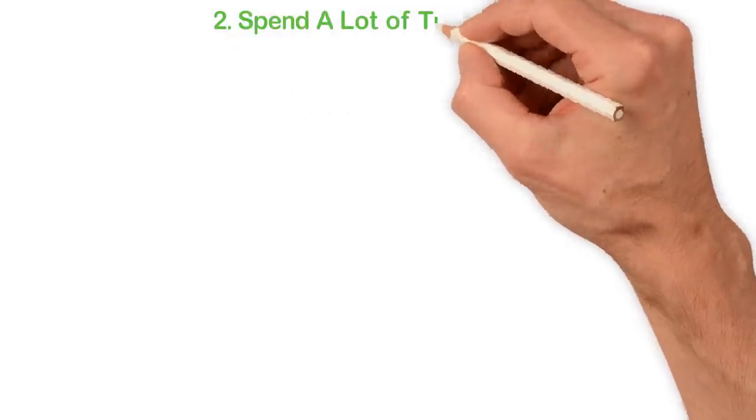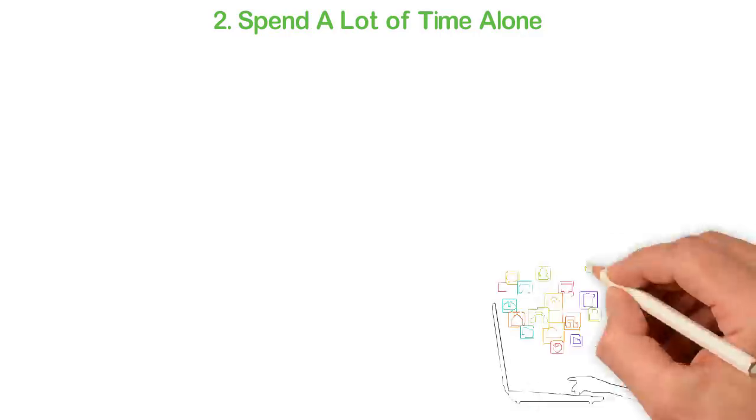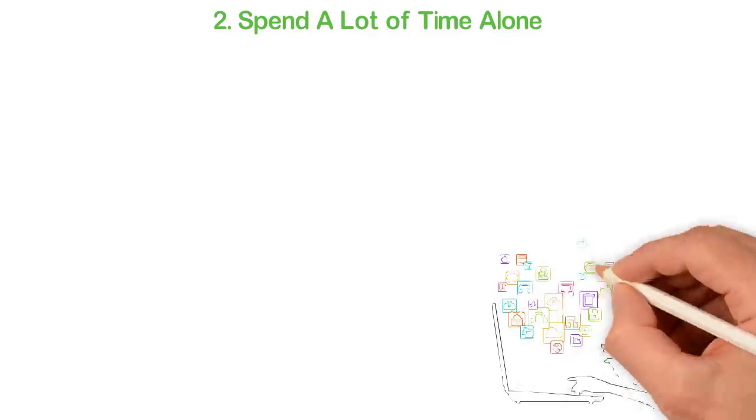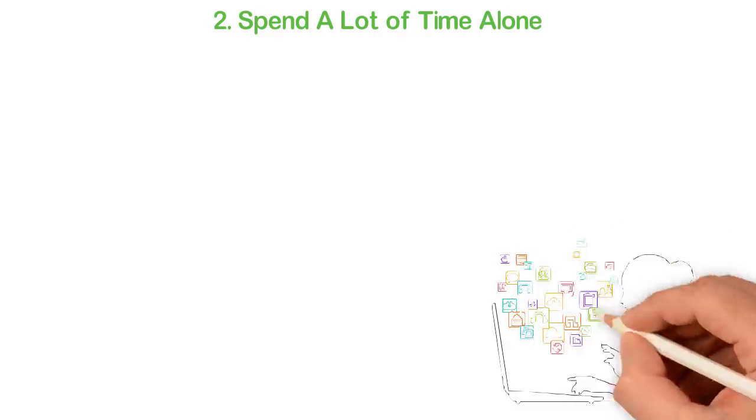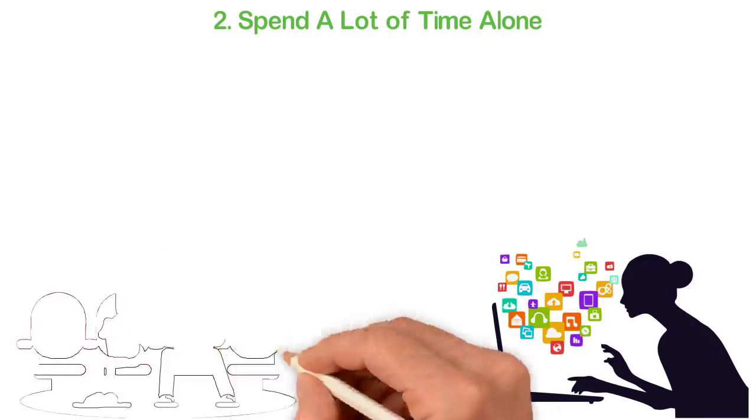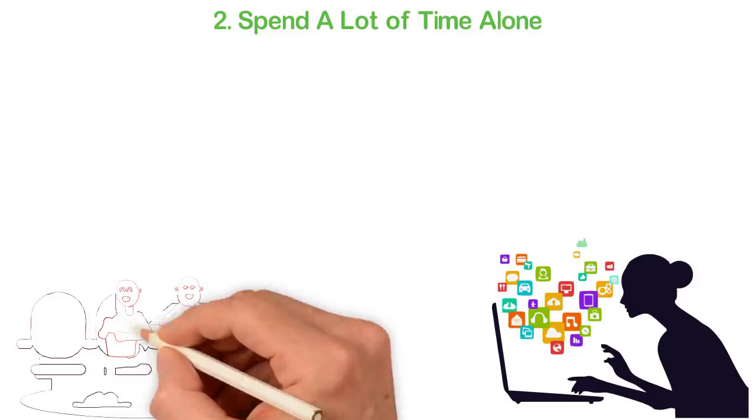2. Spend a lot of time alone. Ours is a very noisy world. We are the busiest generation ever in the history of the world. Our attention span was once in minutes. Now it's in seconds. We rush through everything and even while we have nothing to do, the internet gives us more than enough. We can connect with people via social media and spend as much hours as we wish. We spend time with our works, our friends and our phones, but we've got no time to spend with ourselves.